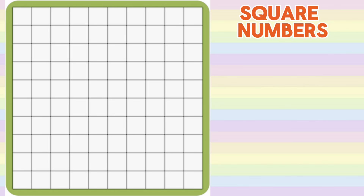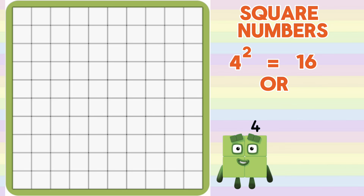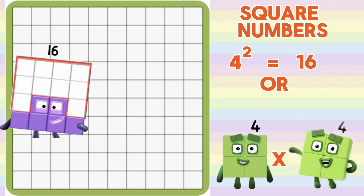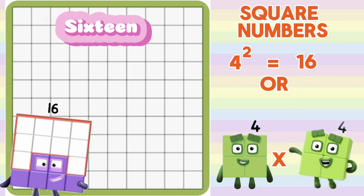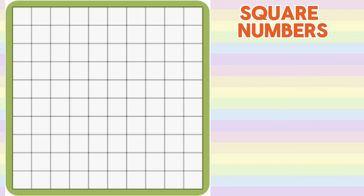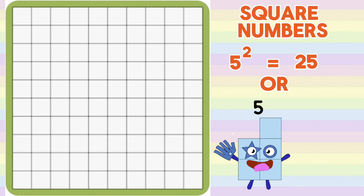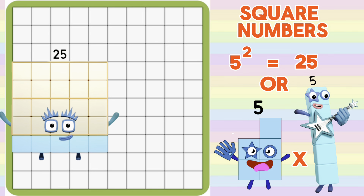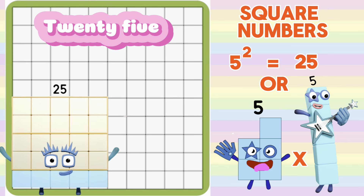Let's try another one. 4 squared is equals to 16, or 4 multiplied by 4 is equals to 16. 5 squared is equals to 25, or 5 multiplied by 5 is equals to 25.